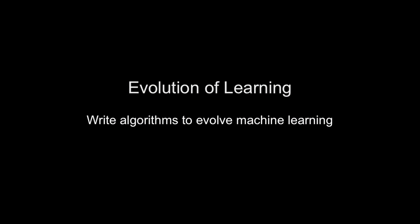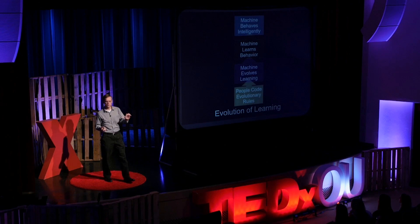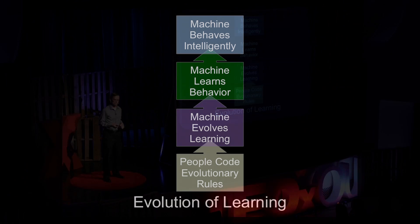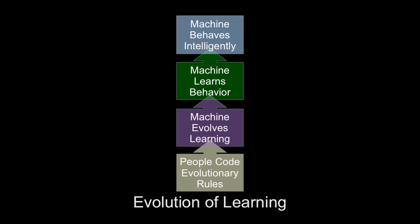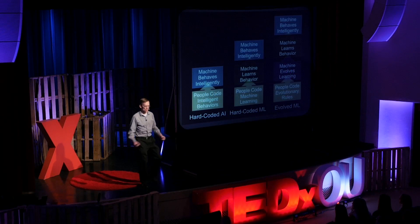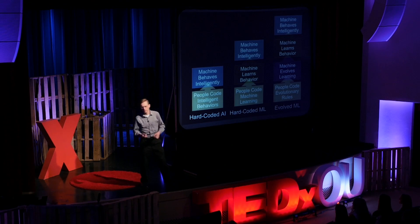So imagine that instead of trying to evolve devices, we decide we want to evolve learning rules so we can have better machine learning. The idea is that we code up these evolutionary rules, the machines evolve learning, the machines learn their behavior, and then behave intelligently. Hopefully we can get even farther — it's like taking another step back, getting more momentum before our leap.